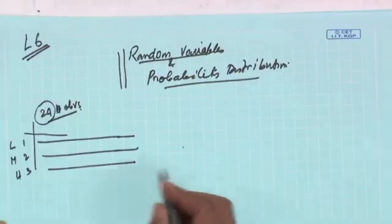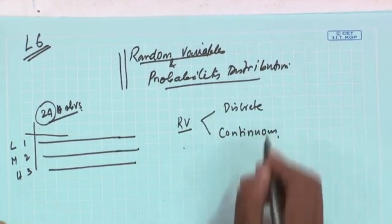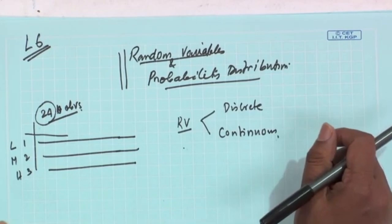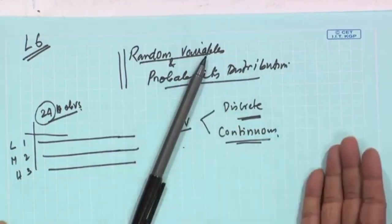A random variable can be discrete or continuous. The intensity level at target detection can have any value — not just 90 or 91, but 90-point-something. That is a continuous random variable. But if you toss several coins, the number of heads is a random variable that can only be 0, 1, 2, and so on — you cannot say 5.5 or 6.25. So these are counts — discrete random variables.